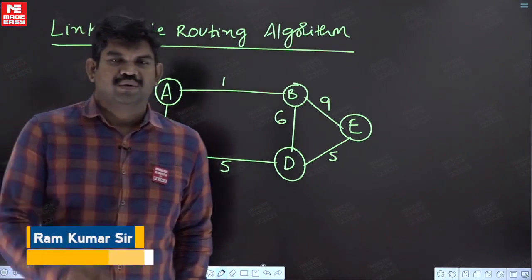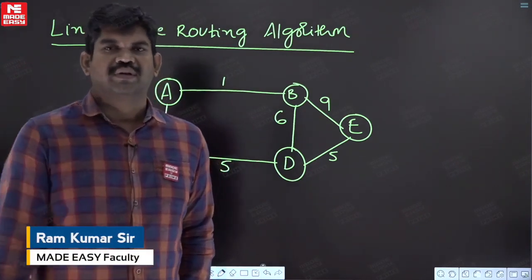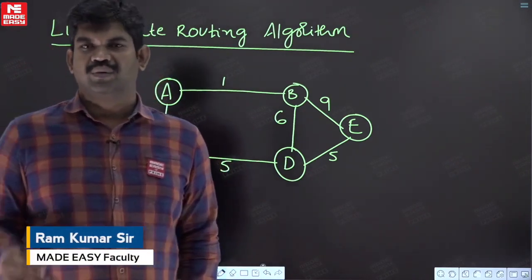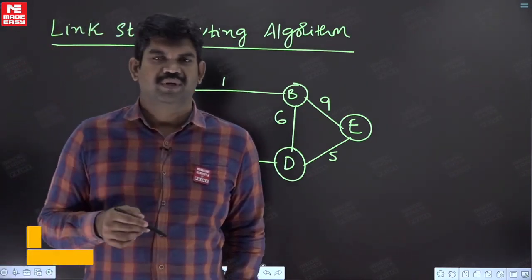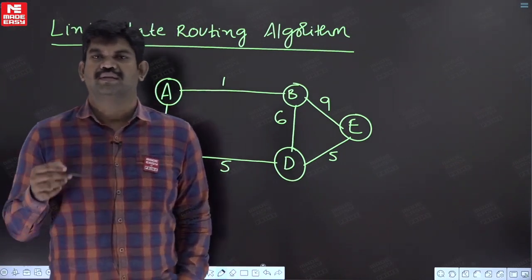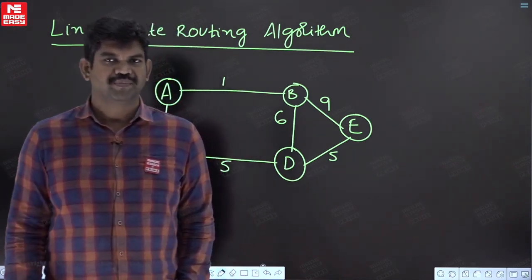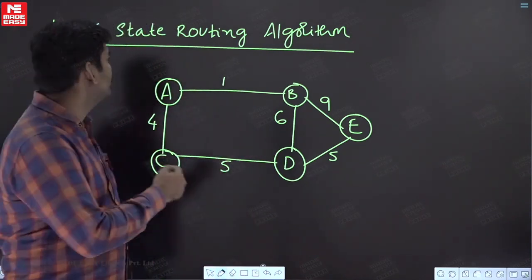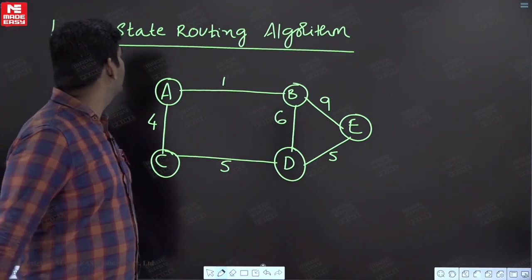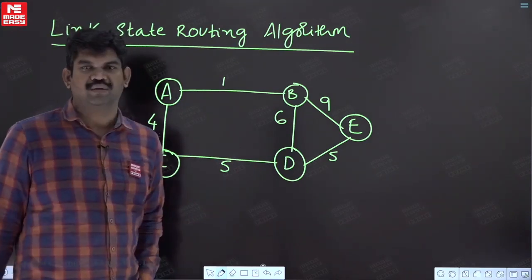Now let us go to the actual problem in case of distance vector routing — we got a problem called the count to infinity problem. So let us go for one more algorithm called the link state routing algorithm.